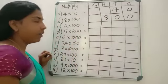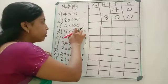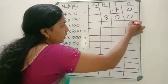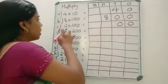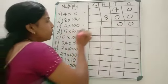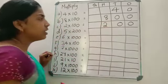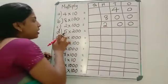Next: 2 into 100. How many zeros are here? 2 zeros. So start writing from the 1's place — 2 zeros. Then 2 into 1 is 2. So the answer is 200.